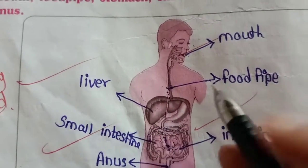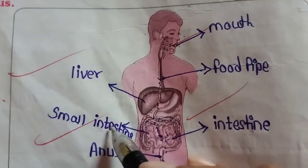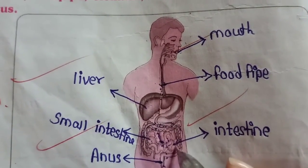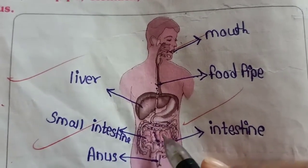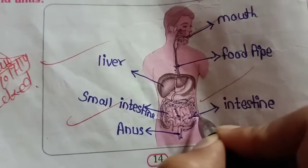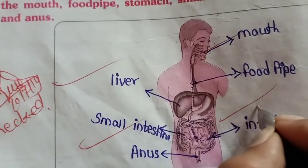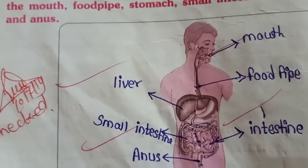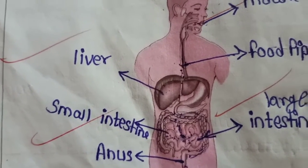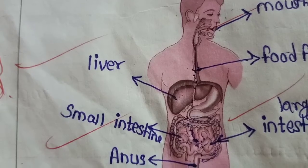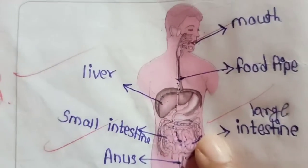You can see the organs here: it is the mouth, then the food pipe, then the liver, then the small intestine, then the large intestine. Many organs work together and form a system. This system helps us to digest our food — it's called the digestive system.